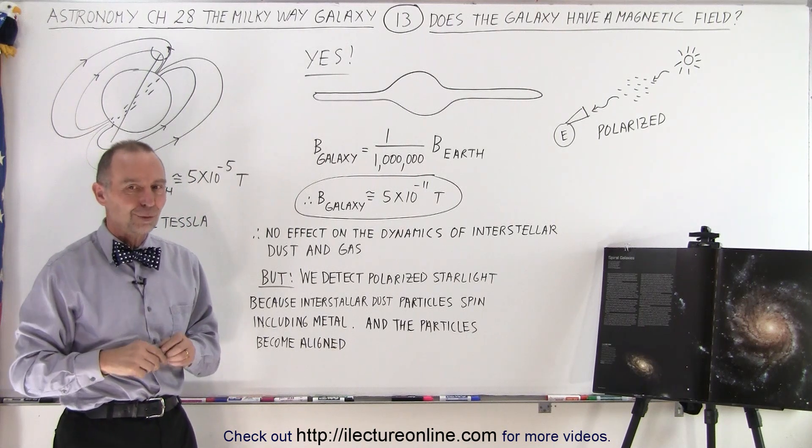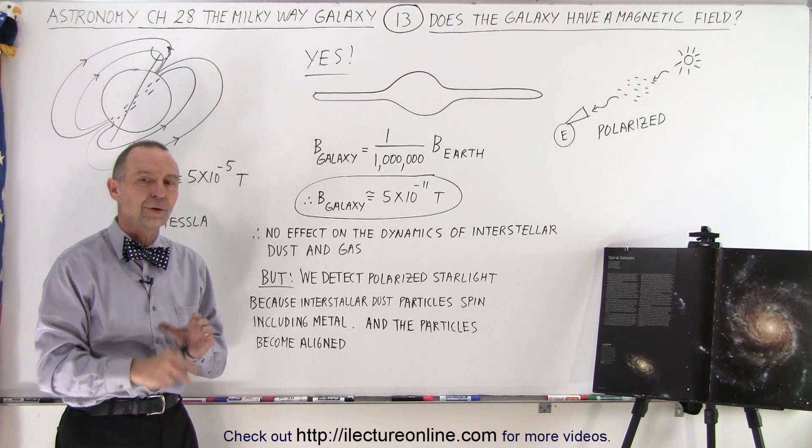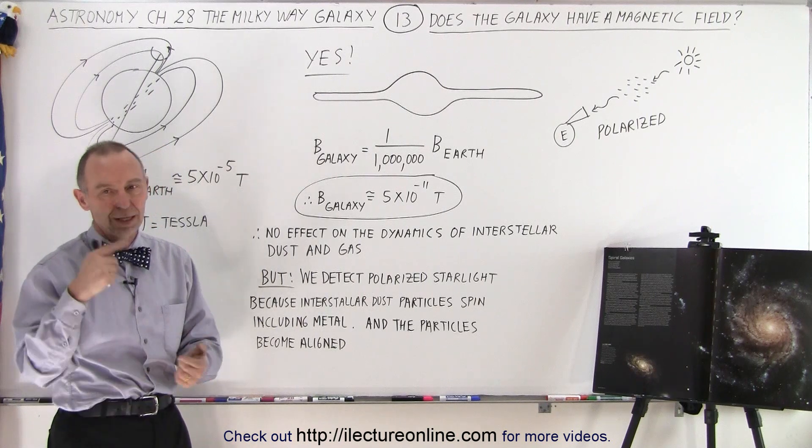You cannot have a monopole for a magnetic pole. They always have to be north and south.